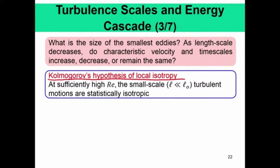Isotropic means that you define a statistical quantity which is invariant upon translation and rotation of your coordinate system — it does not have any directional sense. Whichever direction you rotate, the statistic stays the same. Importantly, we are talking about the statistical field, not the instantaneous field. This scale has to be much smaller than the energy containing scales — that is a critical point.